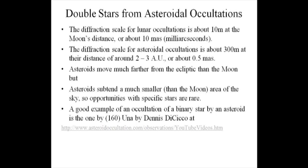The asteroids move much farther from the ecliptic than the moon, so you have a larger range of stars available. The asteroids present a much smaller angular size, so opportunities for specific stars are very rare. We did observe an occultation of Regulus in 2005, and we have another opportunity in 2014 when the path of an occultation of Regulus by the asteroid Origini passes over New York City. A good example of an occultation of a binary star by an asteroid is one by the asteroid Una.